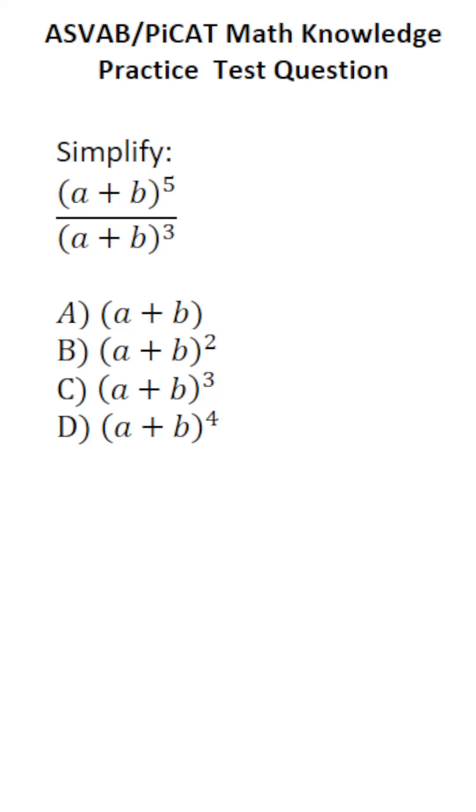This math knowledge practice test question for the ASVAB and PiCAT says simplify (a + b) to the fifth over (a + b) to the third.